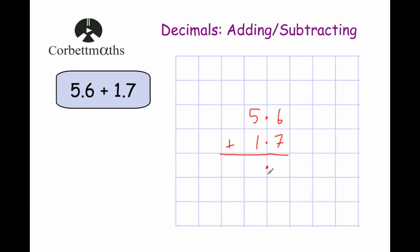Now I'll work out the addition. So 6 plus 7 is 13 — put the 3 down and carry the 1. In terms of the carrying, you might have a favourite place to carry it to, or where your teacher tells you to. I prefer carrying it here. Some people put it up here or down there — just as long as you remember it, that's okay. So 5 plus 1 is 6, plus 1 is 7. So our answer is 7.3. So 5.6 plus 1.7 is 7.3.